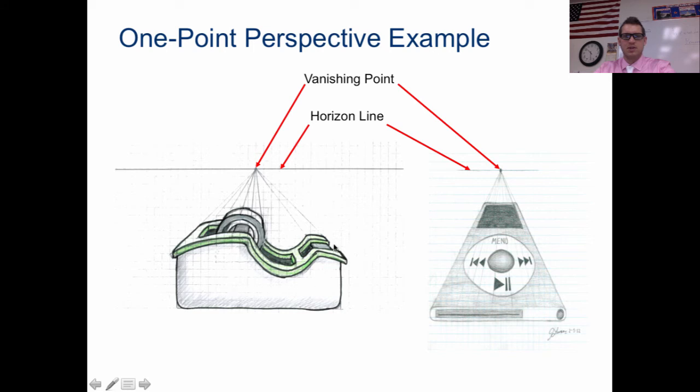Now, look right here at this tape dispenser. You can see how the lines are all going to one vanishing point, which means the front of the tape dispenser is larger than the back of the tape dispenser. So in a 2D drawing,